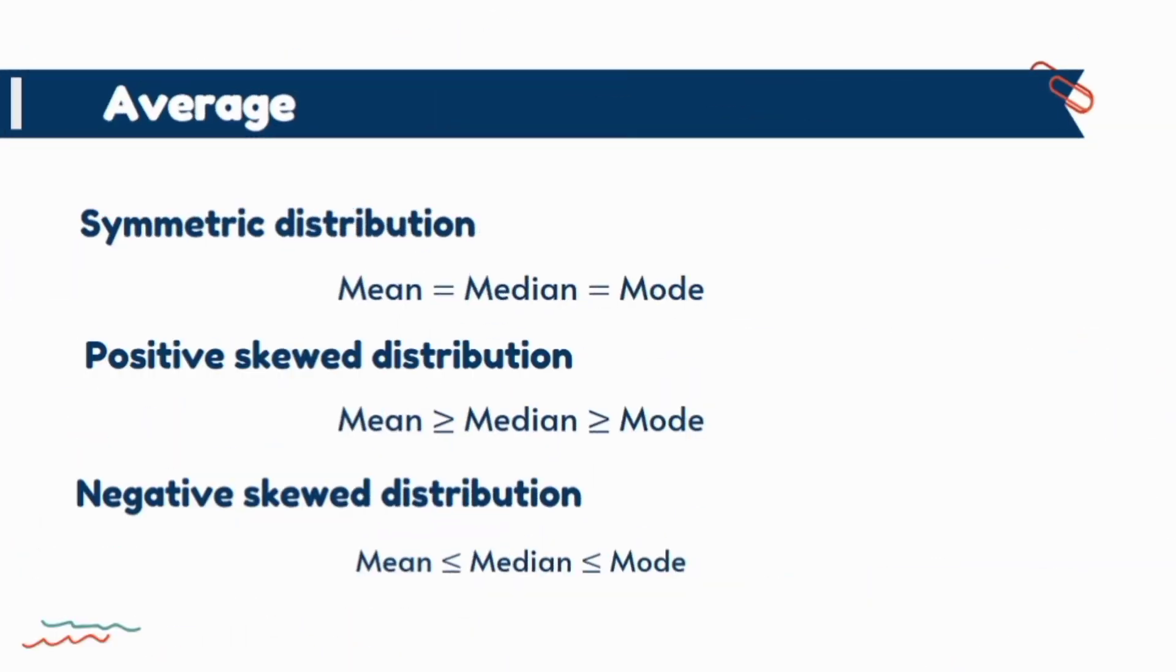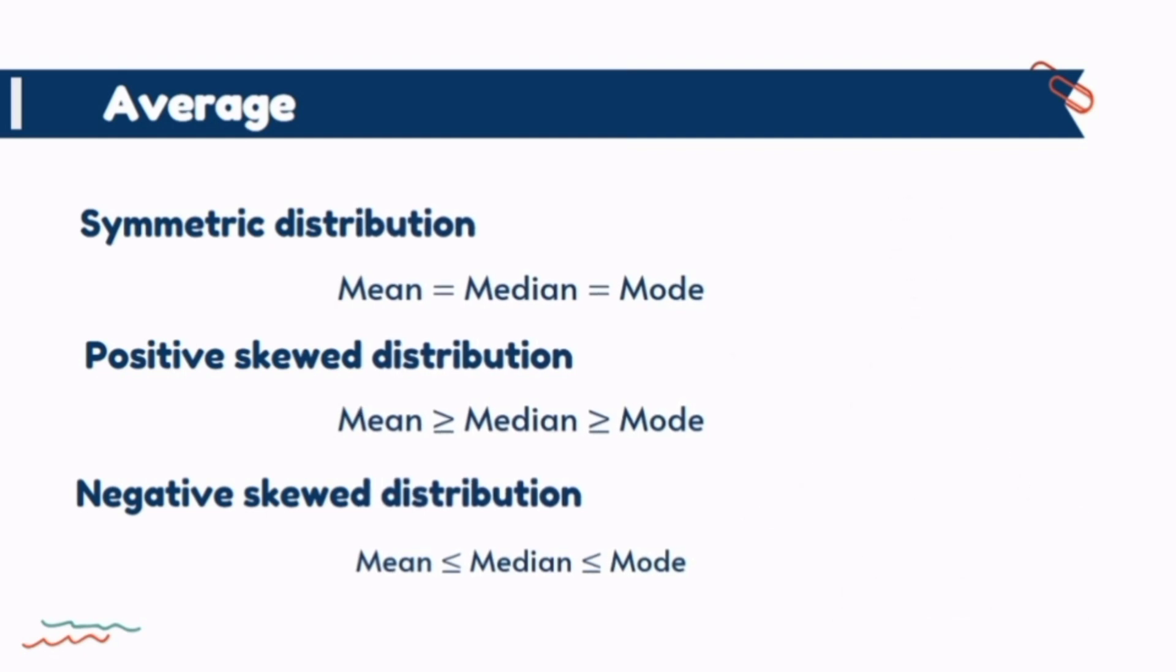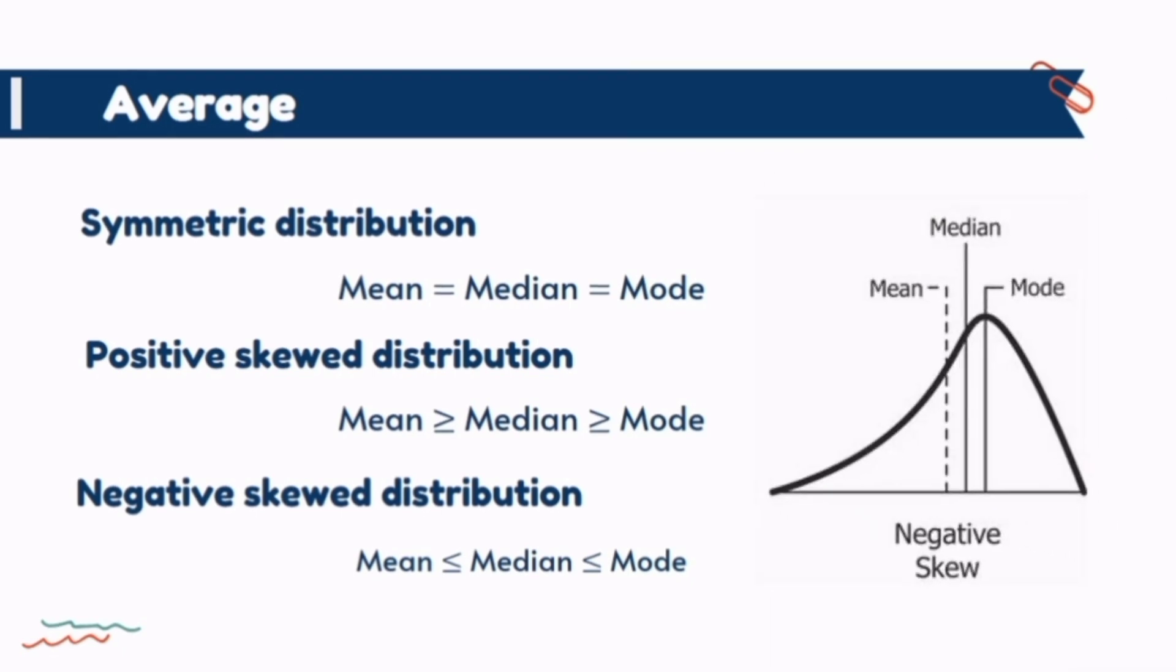If we calculate mean, median, and mode from same data set and all three measures are equal, such a distribution is called symmetrical distribution. If mean is greater than median and median is greater than mode, this type of distribution is called positive skewed distribution. And if mean is the lowest value than other two measures, then in this situation it is a negative skewed distribution.